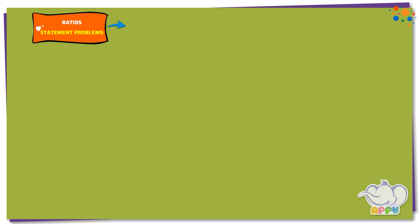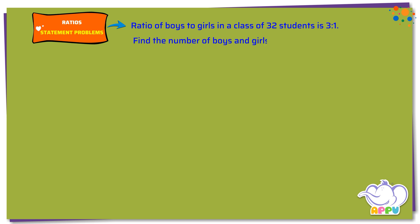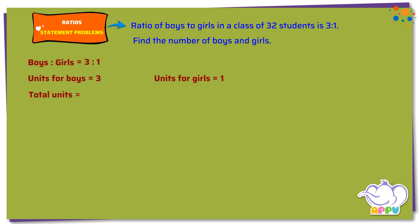Statement Problems. Ratio of boys to girls in a class of 32 students is 3 is to 1. Find the number of boys and girls. We have ratio of boys is to girls equals 3 is to 1. This means units for boys equals 3, and units for girls equals 1. Total units equals 3 plus 1 equals 4.